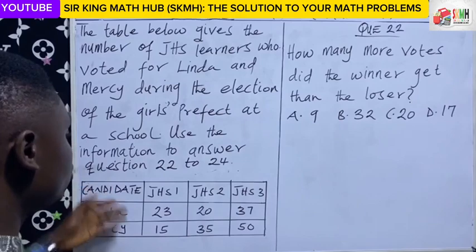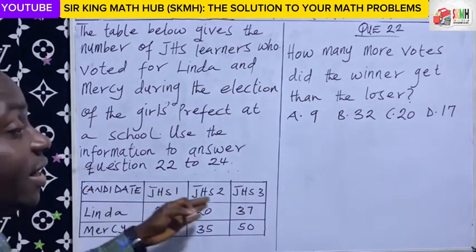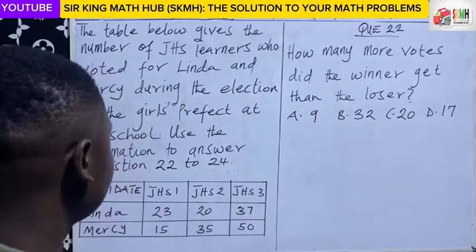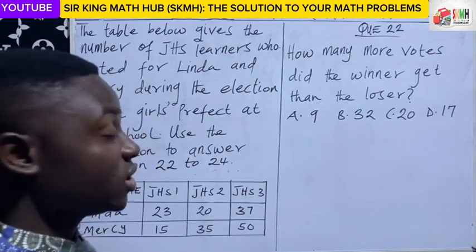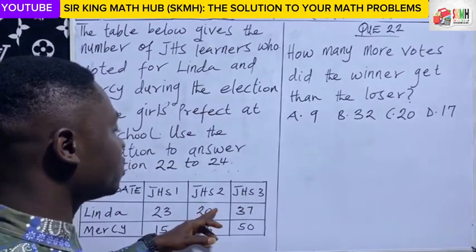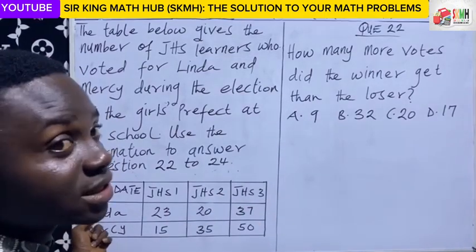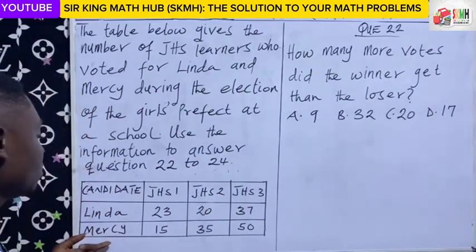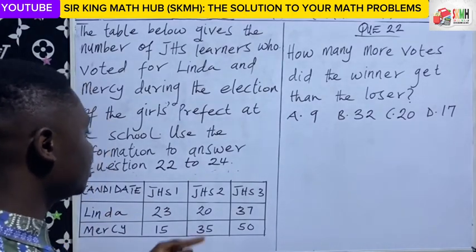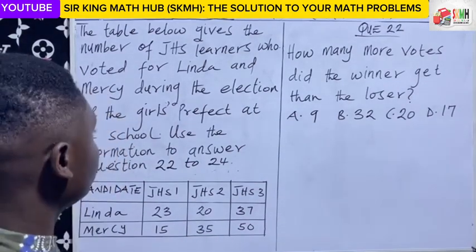We have two candidates, Linda and Mercy, and three classes: GHS1, GHS2, and GHS3. For Linda, she had 23 votes from GHS1, 20 votes from GHS2, and 37 votes from GHS3. For Mercy, she had 15 votes in GHS1, 35 votes in GHS2, and 50 votes in GHS3.